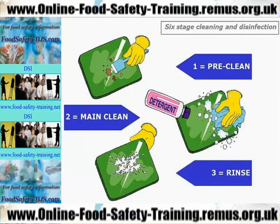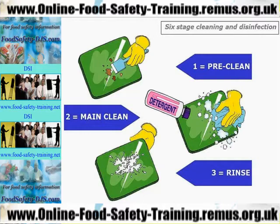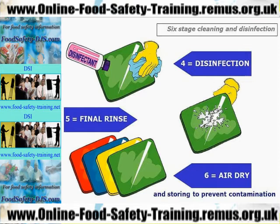We are now going to look at six-stage cleaning and disinfection. First, the pre-clean: the initial removal of any food accumulations, dirt and debris. Second, the main clean, undertaken with a detergent, which brings all the food debris, grease and dirt into solution form. Third, the rinse, which takes away that solution containing all the dirt and food debris.